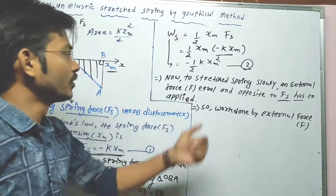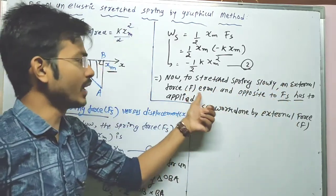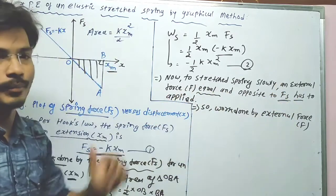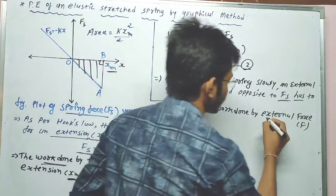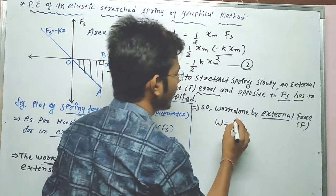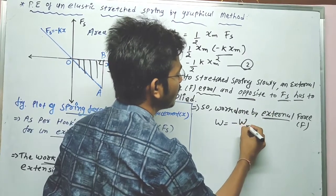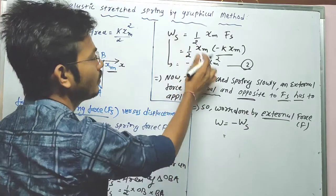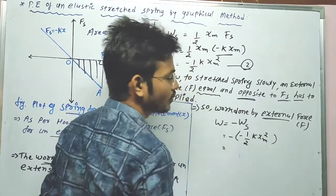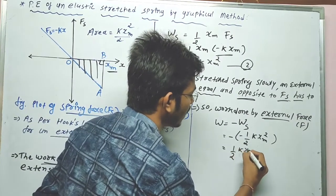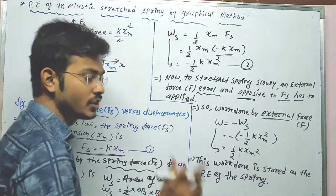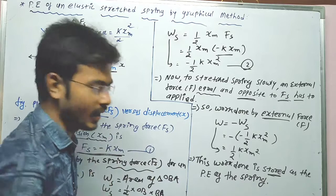To stretch the spring slowly, an external force F equal and opposite to the spring force Fs has to be applied. So the work done by the external force W is equal to minus Ws. Since Ws equals minus one-half k xm squared, we get W equals minus of minus one-half k xm squared, and minus times minus gives plus. So the work done by the external force is one-half k xm squared. This work done is stored as the potential energy of the spring.